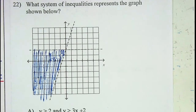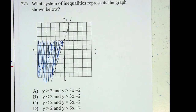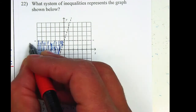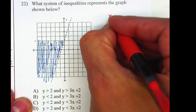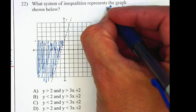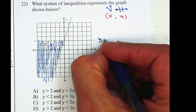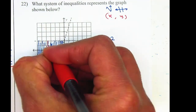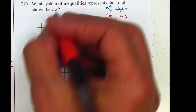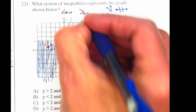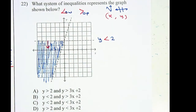Problem number 22 — what system of inequalities represents the graph below? On the first one, we have a horizontal line — remember, horizontal means y equals a number. In this case, it's going to be 2. We have an inequality and they shaded the lower side, so it'll be less than. The shaded low side means less than, and the top side means greater than. So the answer is not A and not D.